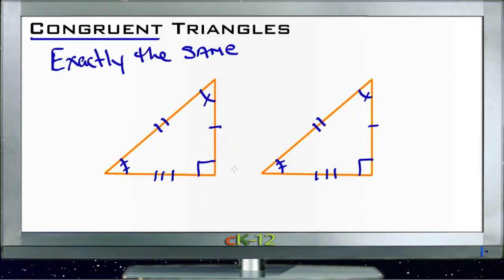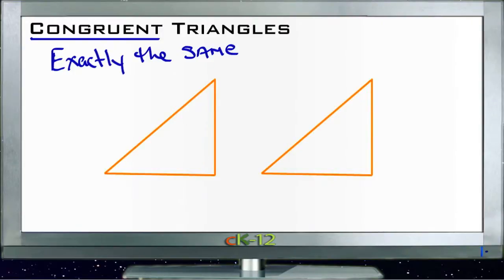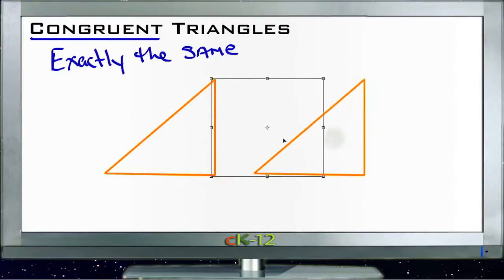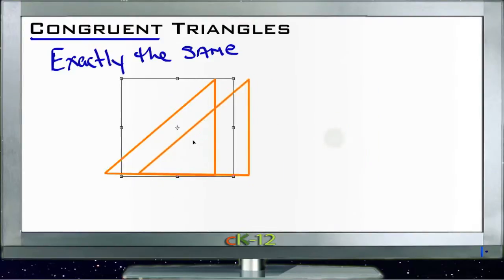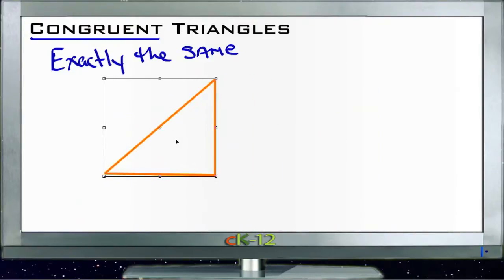You can identify congruent triangles because they can sit right over top of each other and exactly cover each other up. If you were to take one of these triangles and slide it over top of the other one, you can see that they fit over each other exactly, because these two triangles are congruent.